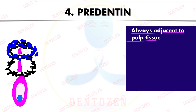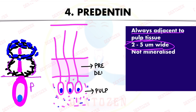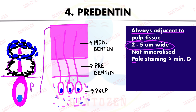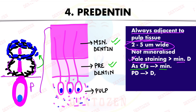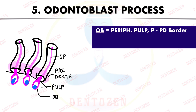Pre-dentine — 'pre' means before — is a layer always present adjacent to the pulp tissue before dentine gets mineralized. It is 2 to 5 micrometers wide and unmineralized — a very important point. Under stained section it stains pale, whereas mineralized dentine is more darkly stained. As collagen fibers get mineralized, this pre-dentine is converted into mineralized dentine, and a new layer of pre-dentine is formed circumpulpally around the pulp.